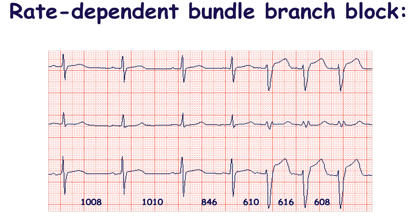Such heart rate at which this transition is observed may also be at the normal range. In other words, bundle branch block occurs when the heart rate exceeds some limit which is in the range from 60 to 100 beats per minute.